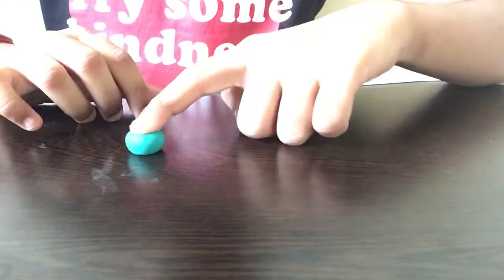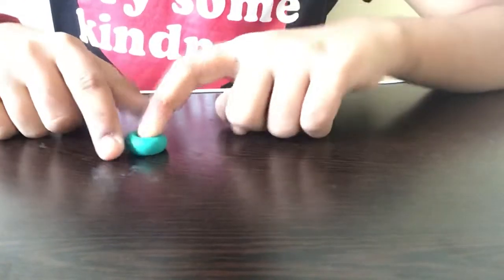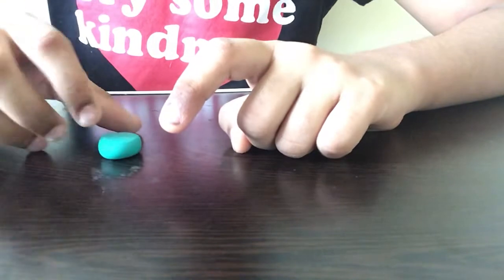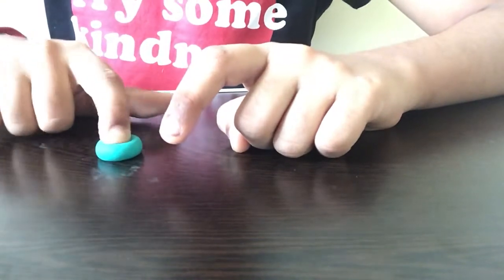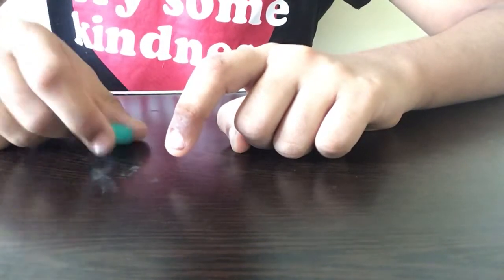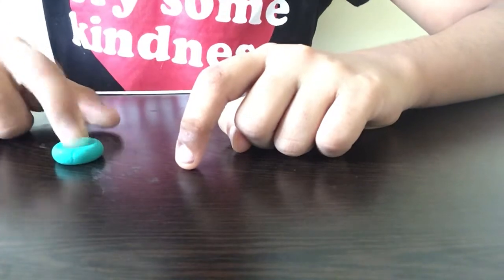First step is that we have to roll it into a ball, so I'm rolling it now. After we are done rolling it, I'm pressing it from the top so that it flattens. We have to turn the clay to the opposite side and press it. We have to repeat this same step until the clay is very thin.